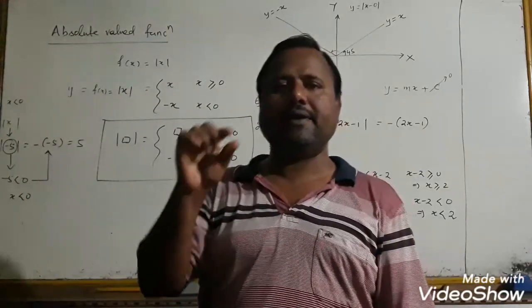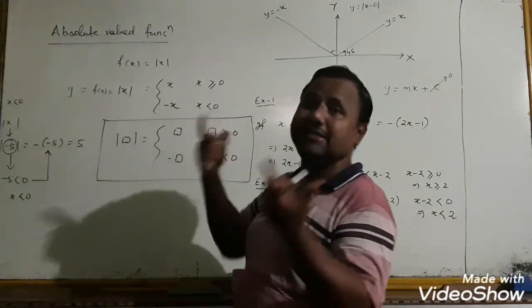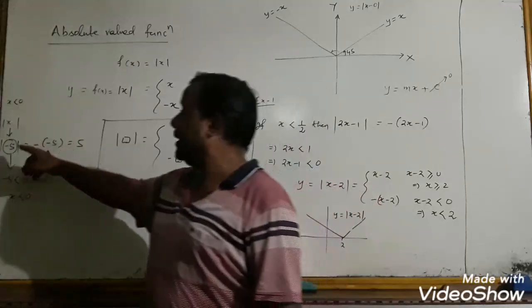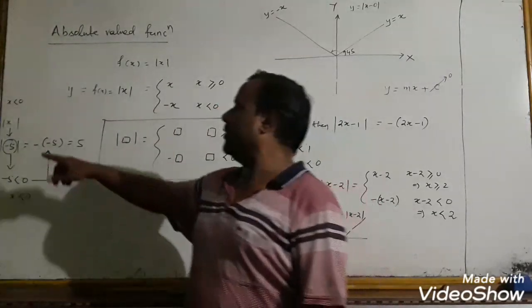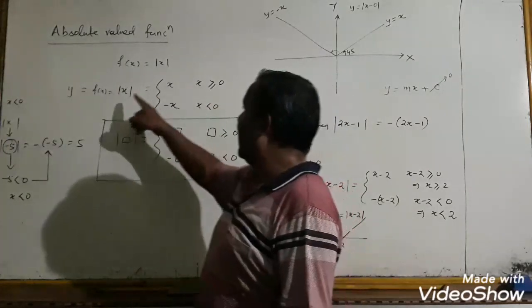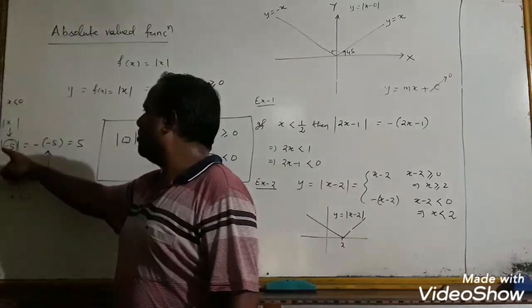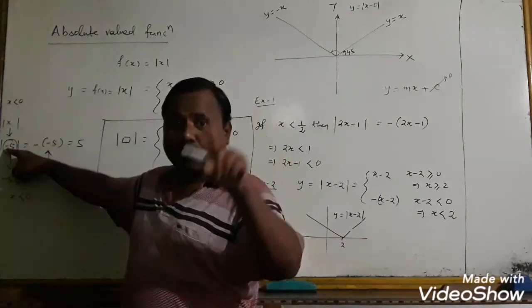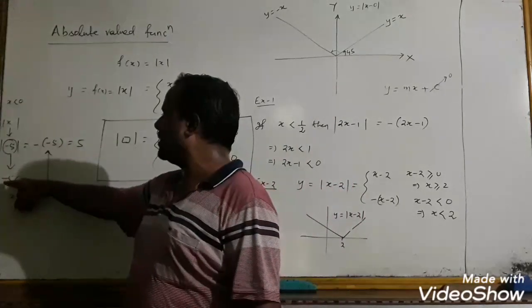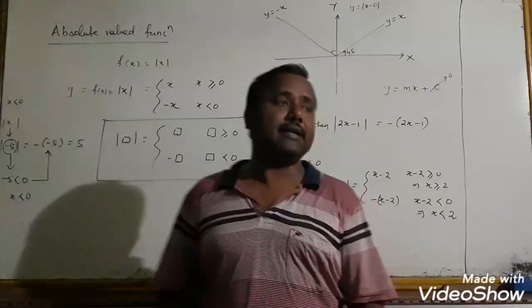Let's take a quick revision. We understand that mod x = x when x ≥ 0, and mod x = −x when x < 0. For example, mod(−5) = −(−5) = 5. The only condition for using −x is when x is less than 0.